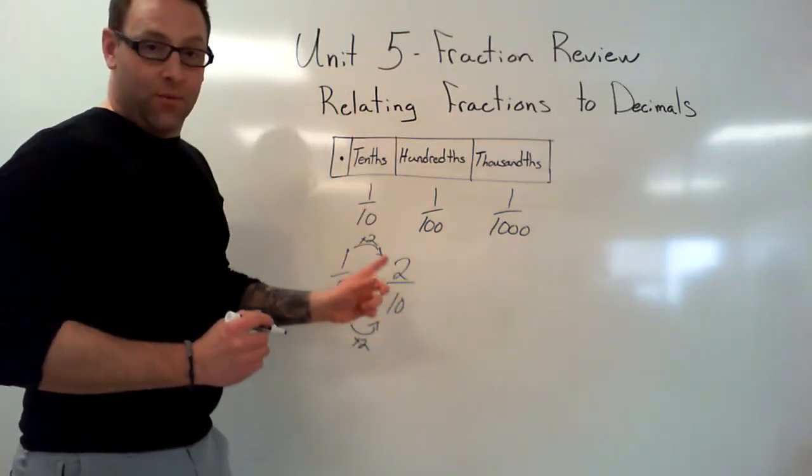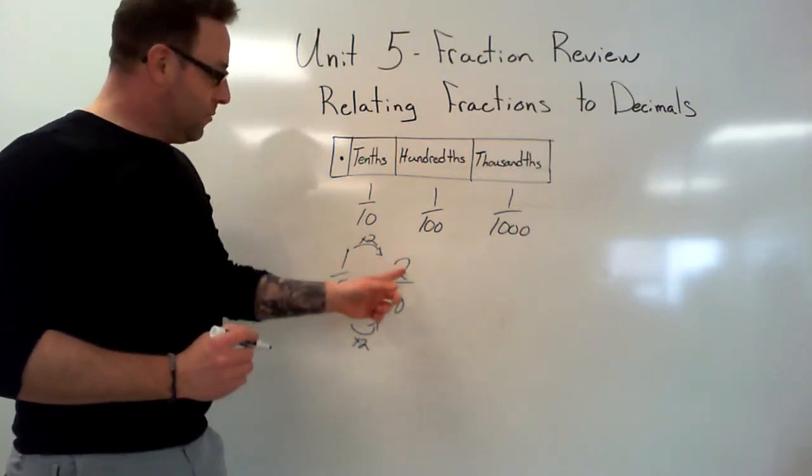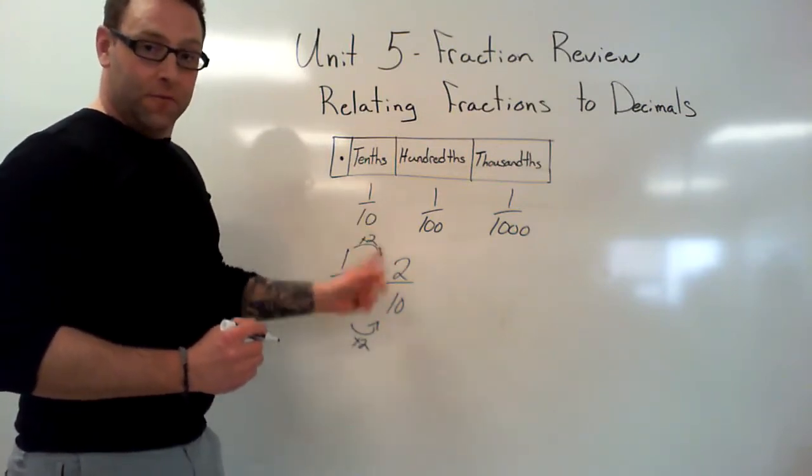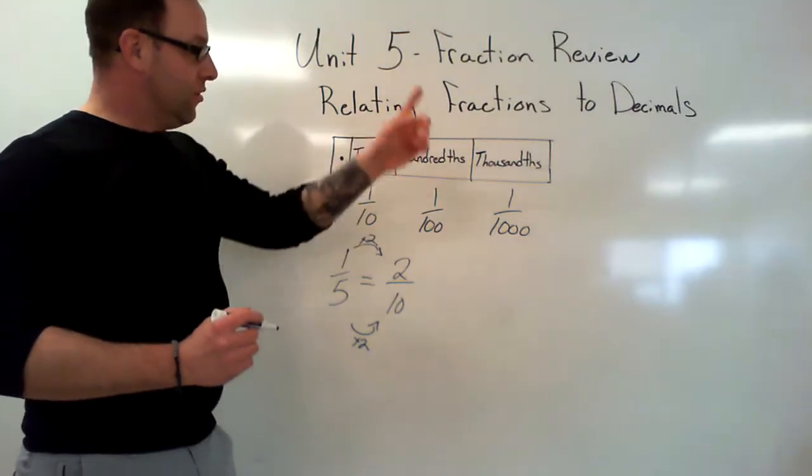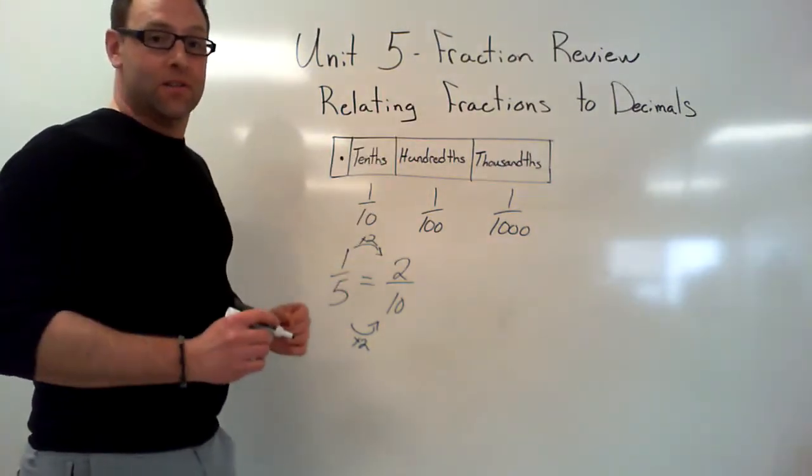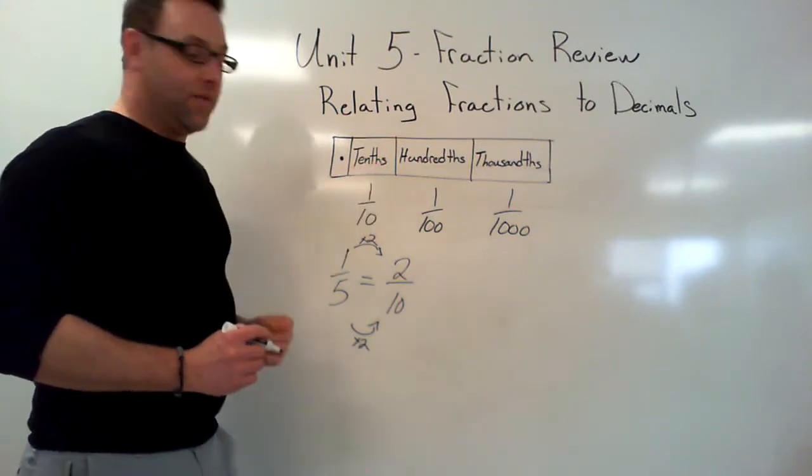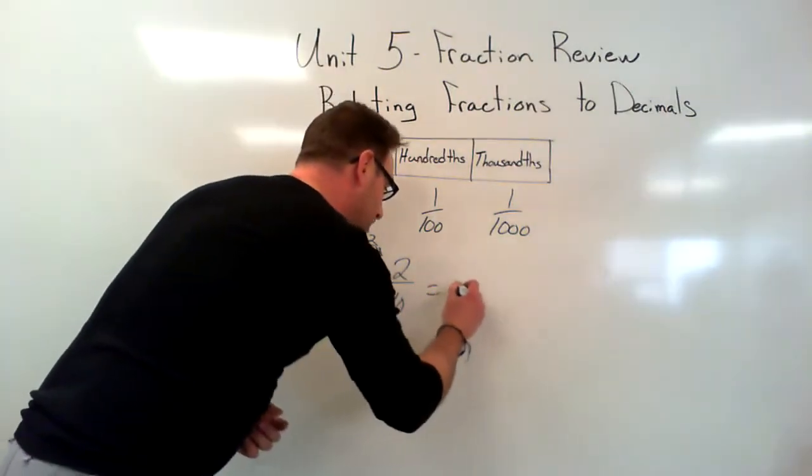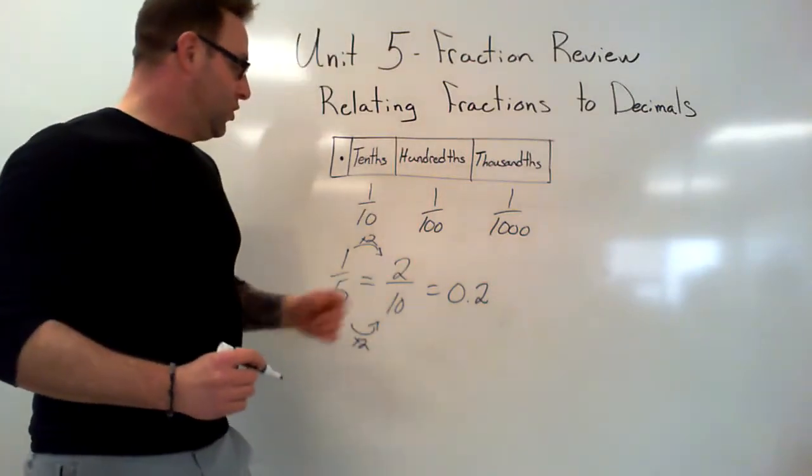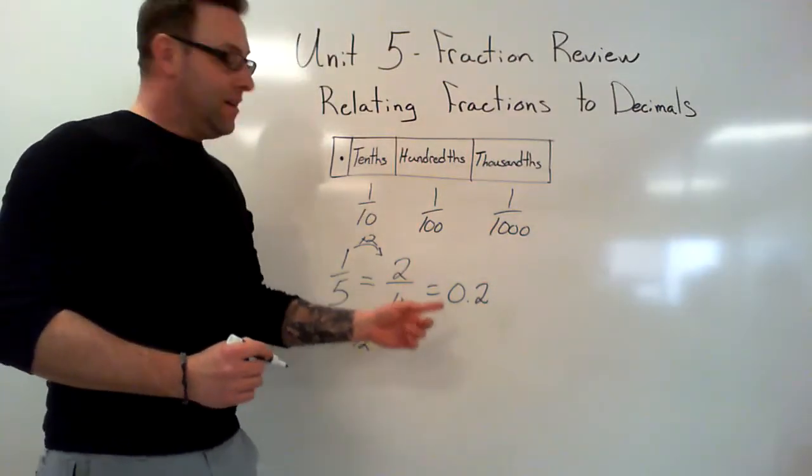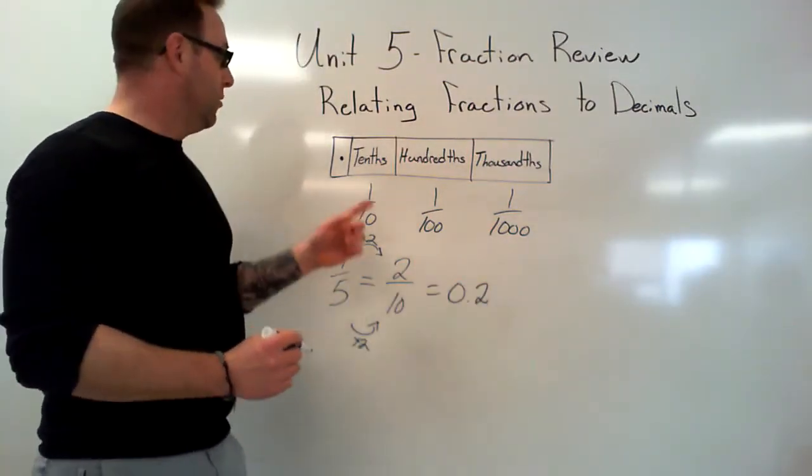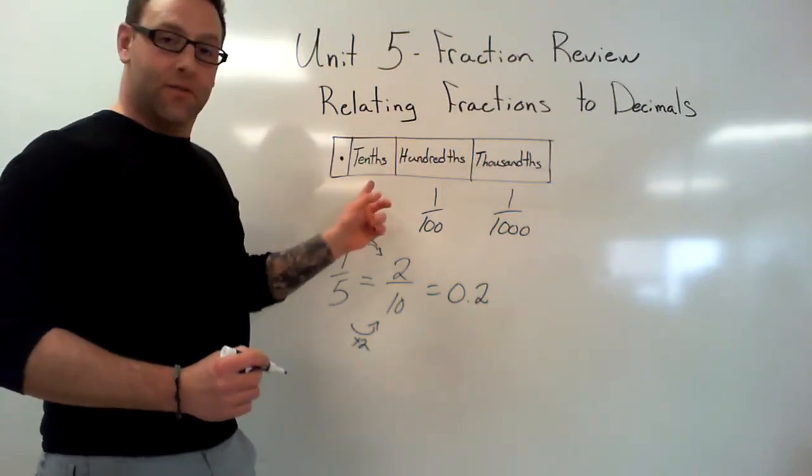This is where things get really nice. Whatever number is on top of a tenth, hundred, or thousand is going to be your decimal using the same decimal place from the place value. 2 over 10 is the same as 0.2.